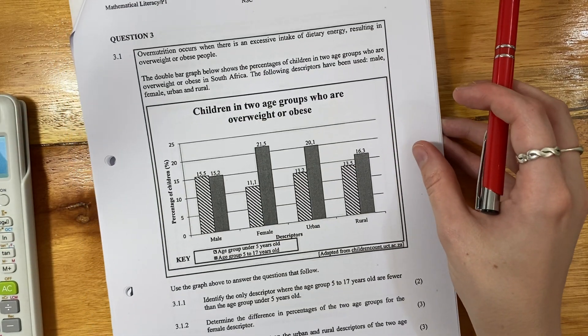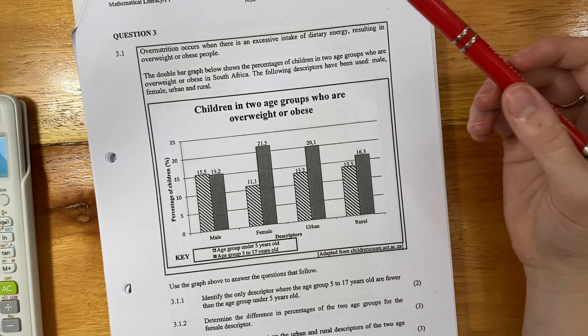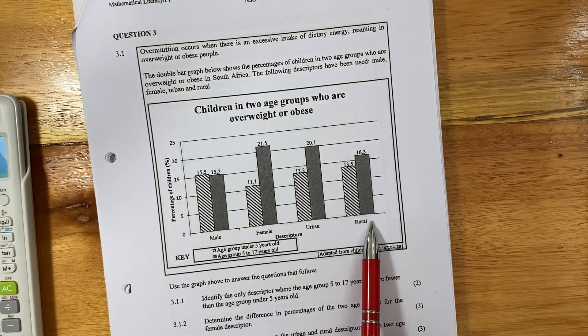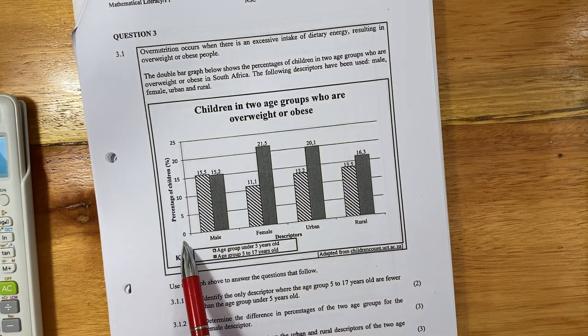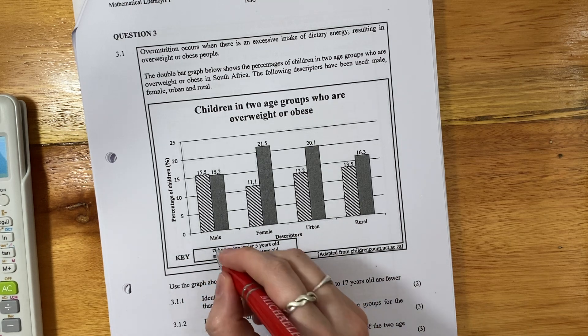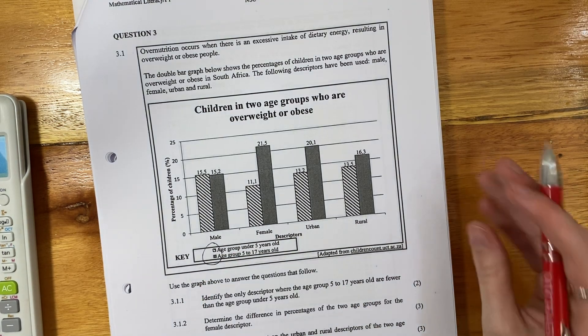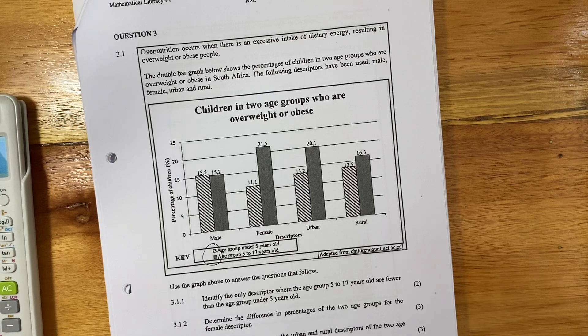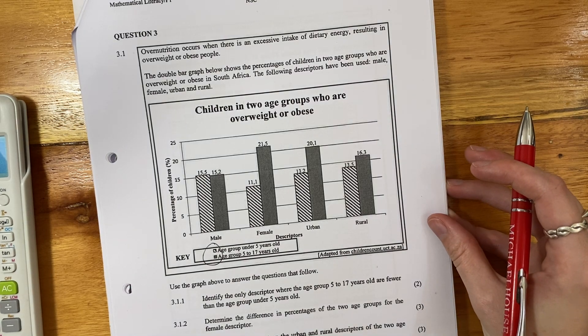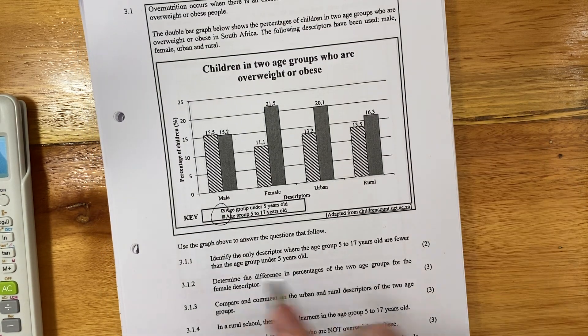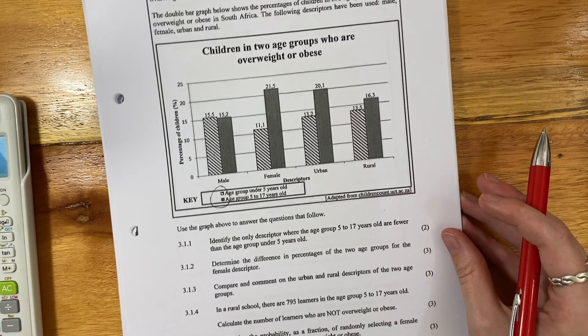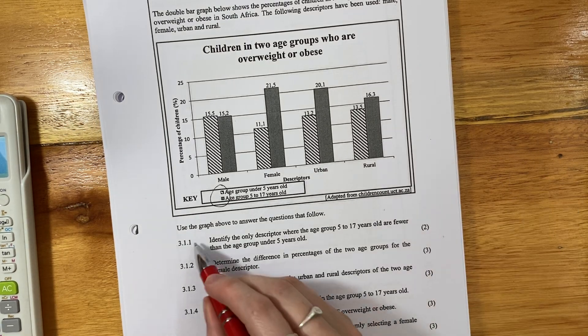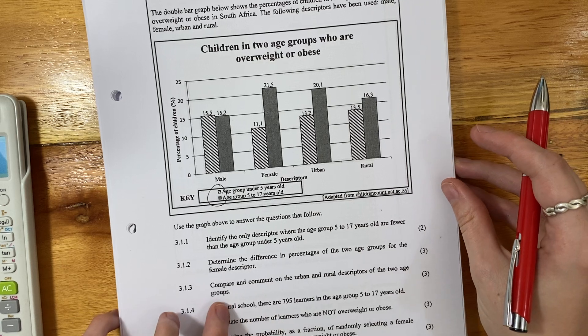Again, don't spend too much time on the graph, but make sure that you can identify the different categories. You know that this is percentages and you've read the key. Students often don't read the key and then they give the wrong insights. You don't want to be one of those students. Let's now look at the next question or the first question, technically. Use the graph above to answer the questions that follow.